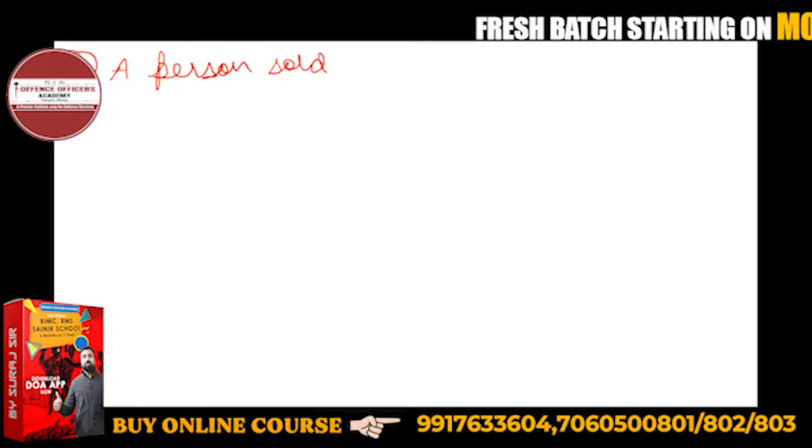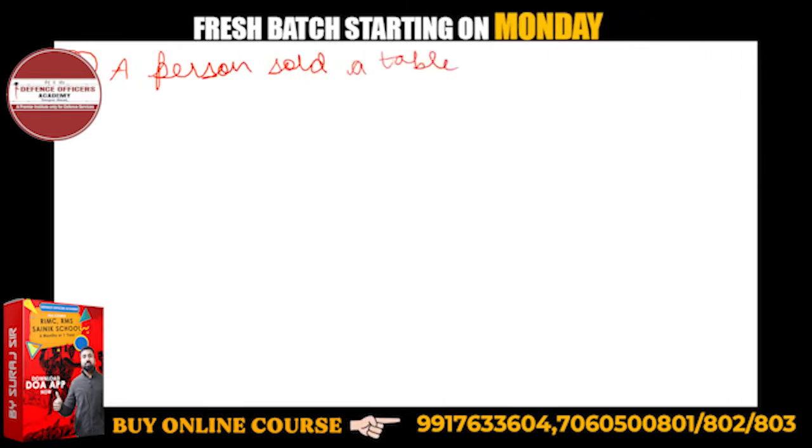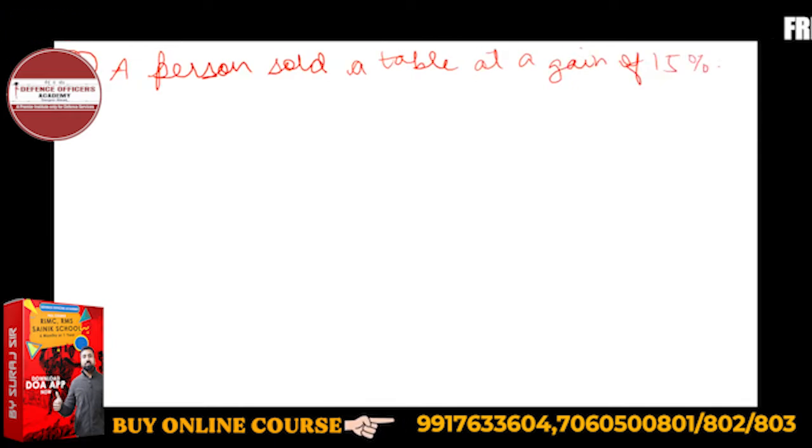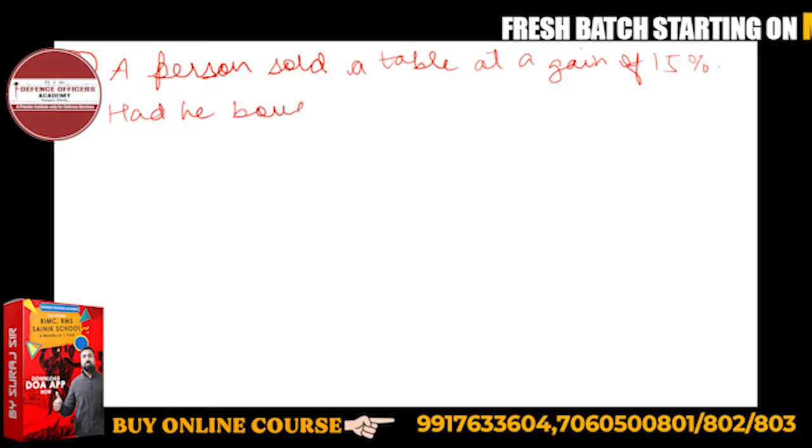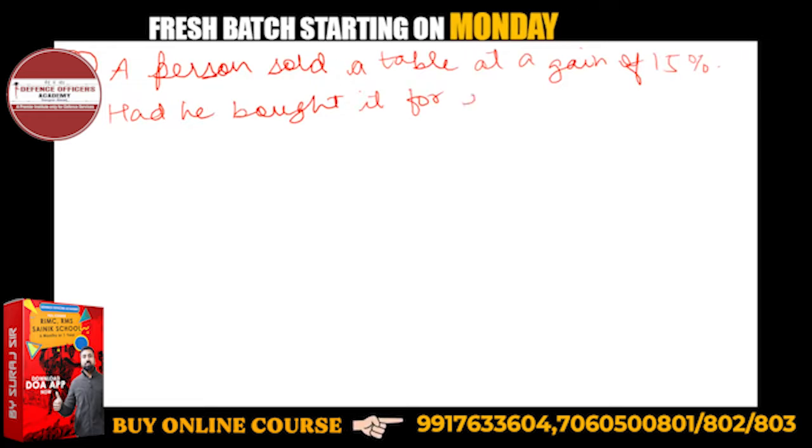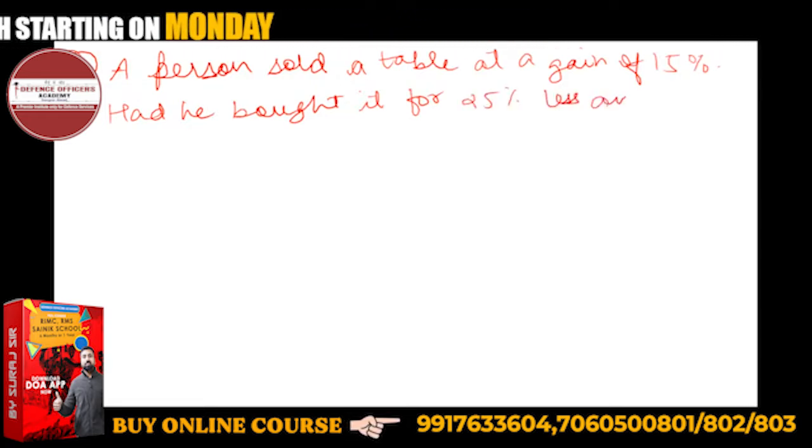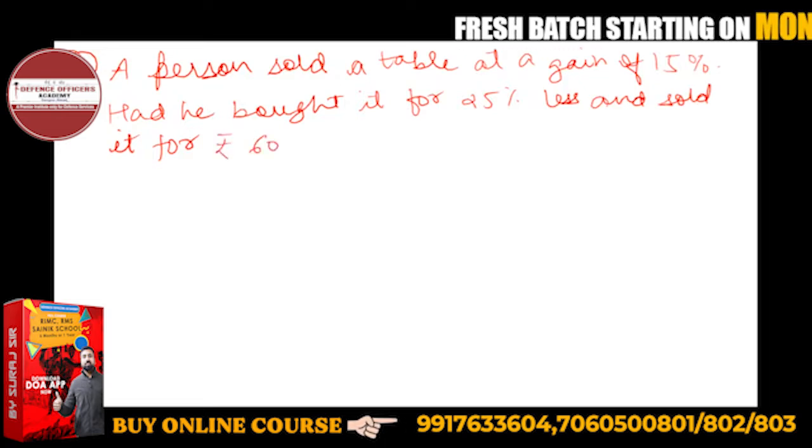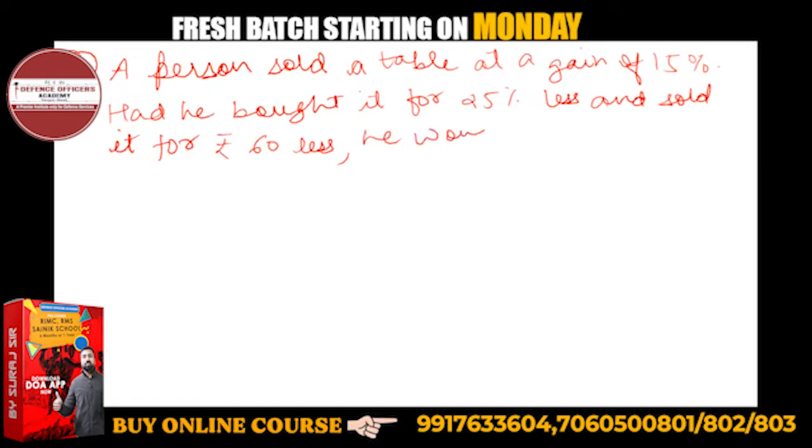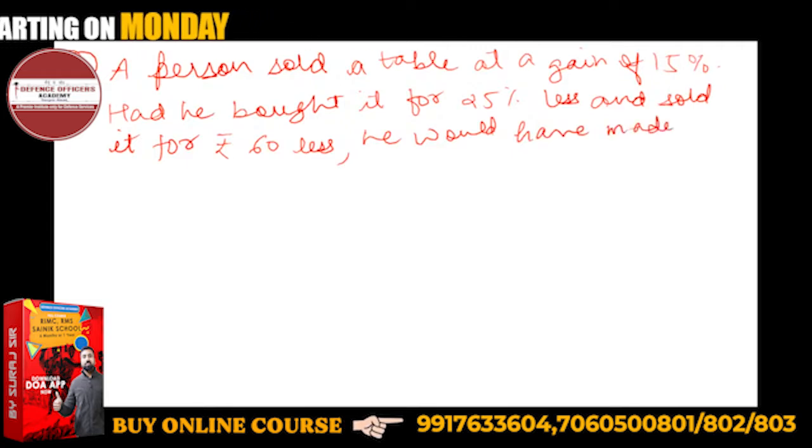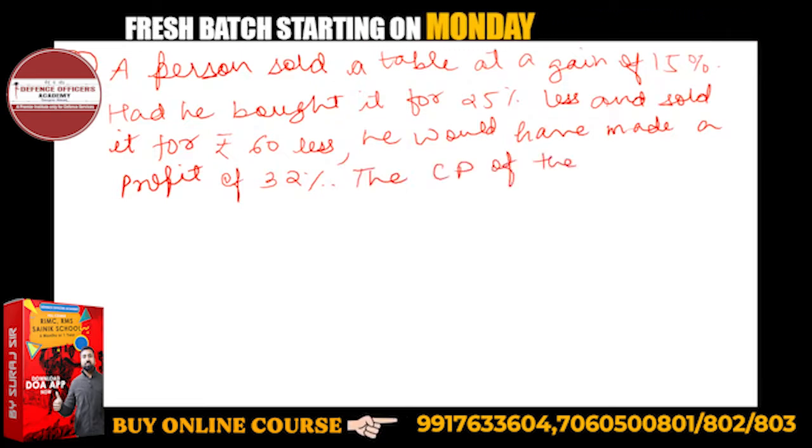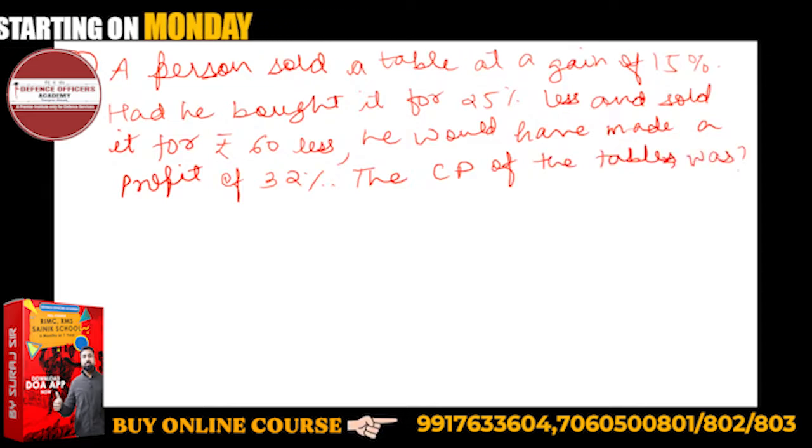A person sold a table at a gain of 15%. Had he bought it for 25% less and sold it for rupees 60 less, he would have made a profit of 32%. We need to find the CP of the table.